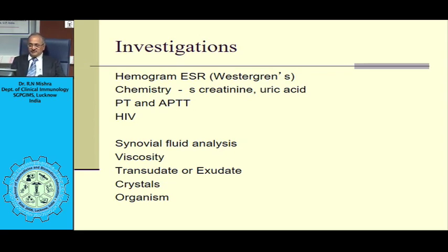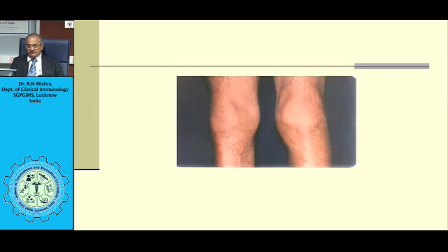In a case of acute or subacute inflammatory arthritis, I would do these investigations: hemogram, ESR to confirm inflammatory nature, chemistry including serum creatinine and uric acid, PT and APTT to exclude hemophilia, HIV serological test, and synovial fluid analysis to look for cell count, viscosity, whether it is transudate or exudate, protein, crystals, and organisms.